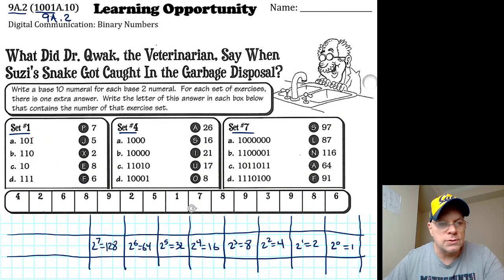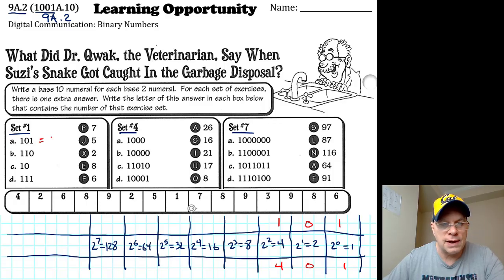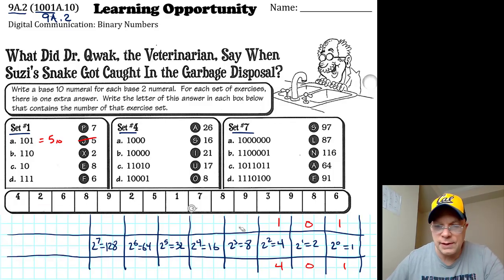Now I'm going to go over how I did those, and there are actually some shortcuts that I didn't realize that are kind of interesting. We don't necessarily need to do this for every single one once we get the hang of it. If I have one one zero, that's one four, zero twos, and one one. I have a four and a one and zero twos. Four and one is five.